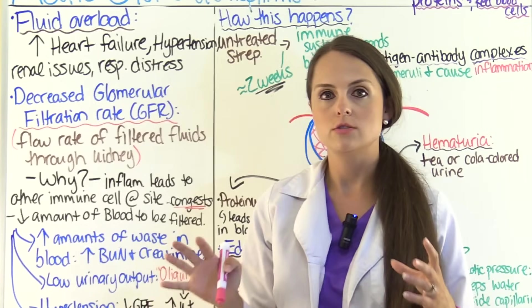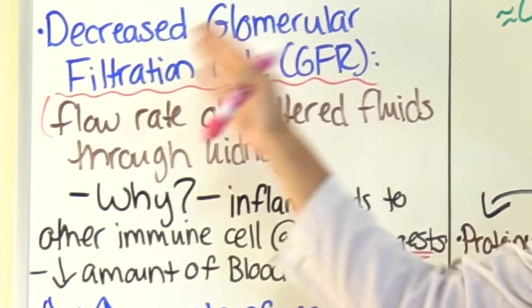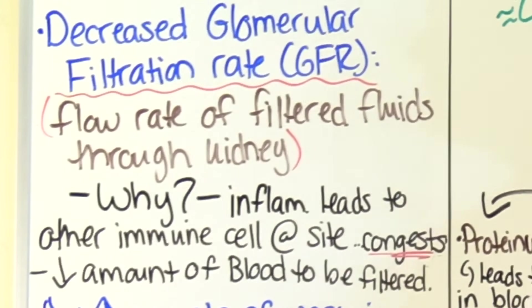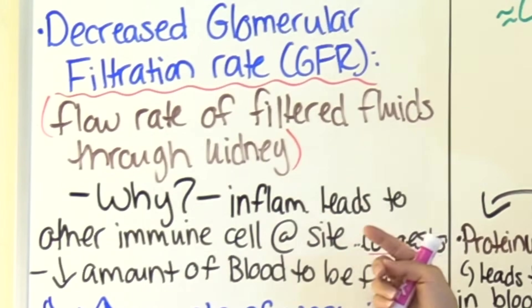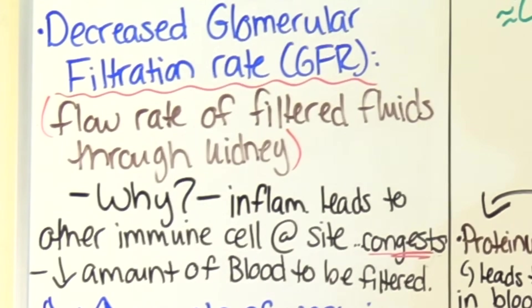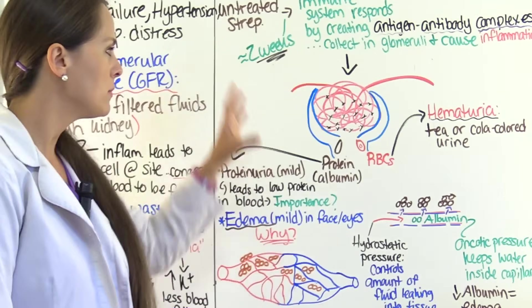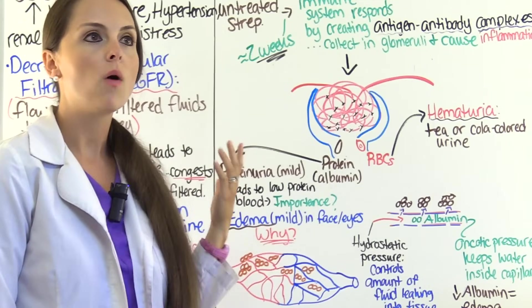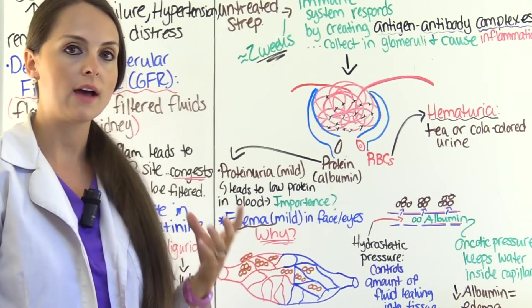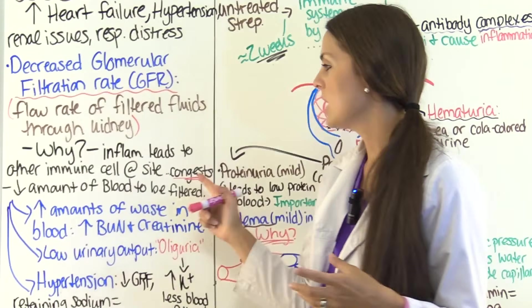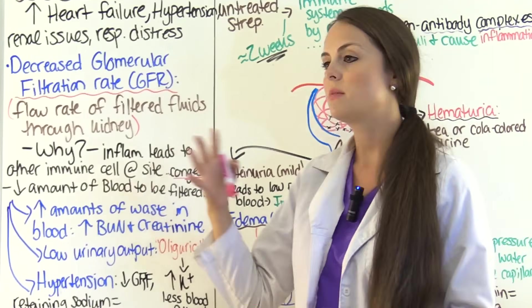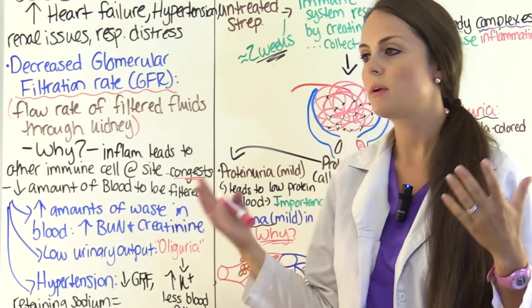These patients will have a decreased glomerular filtration rate — a decreased GFR. The GFR is the flow rate of filtered fluid through the kidneys, and it will go down. This is because inflammation in the glomerulus causes immune cells to congregate there, which congests the glomerulus and decreases the amount of blood that can be filtered — not enough blood can get through to produce filtrate.